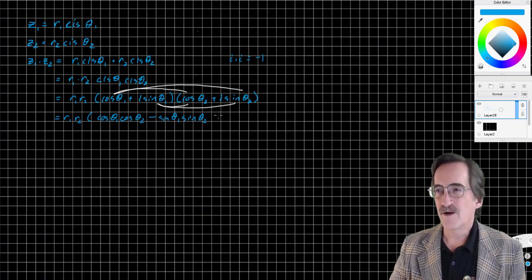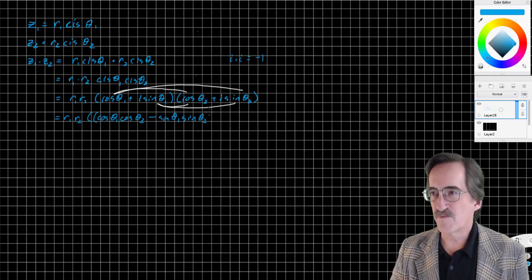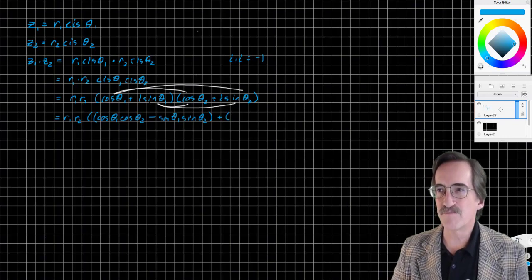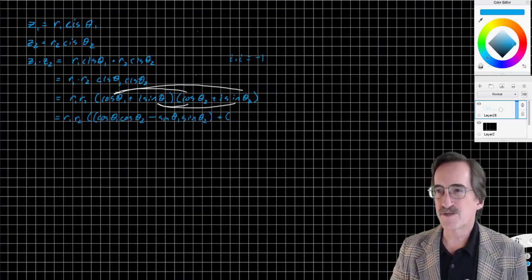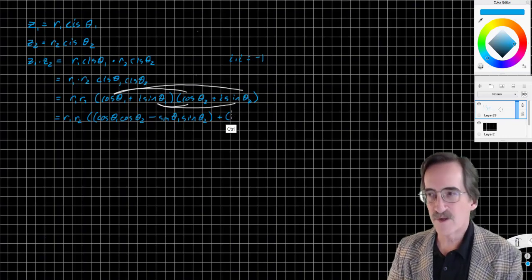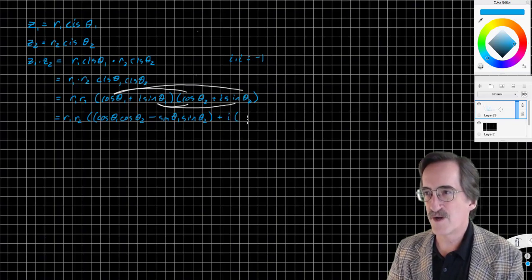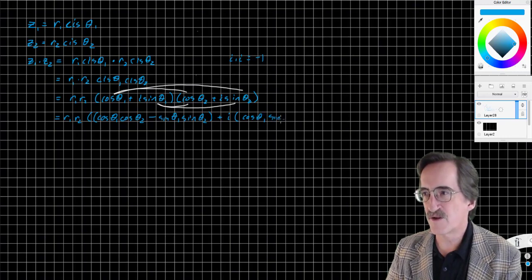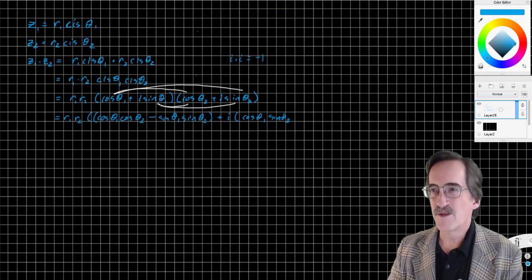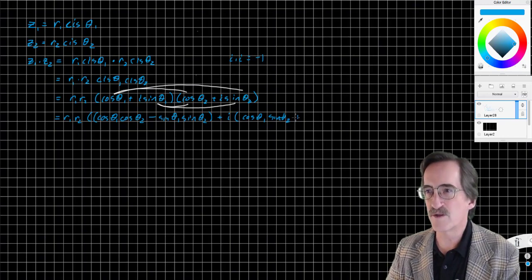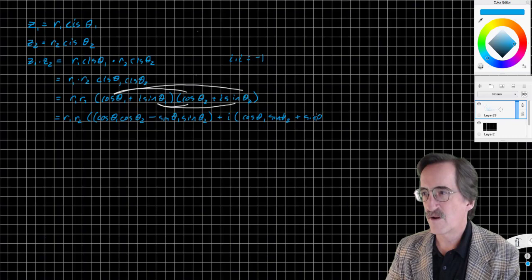I'm going to put parentheses around that to keep it separate here. Plus, let's do the middles and the outsides. The next two terms are going to have an i in it, so I'm going to factor out an i. Cosine theta 1 sine theta 2, and then the middles, sine theta 1 cosine theta 2.